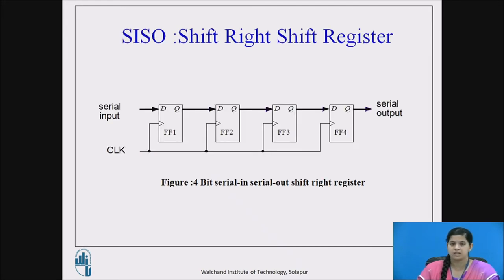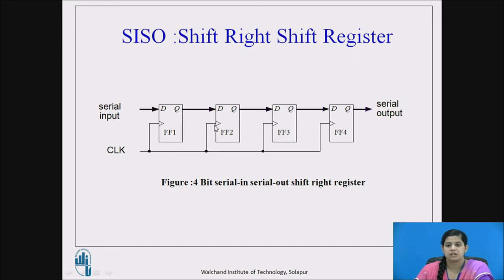First we will see the serial in serial out shift right shift register. Shift right means the bits are shifted towards the right one by one according to the given clock pulse. The block diagram shows a 4-bit serial in serial out shift right shift register. Four D flip flops are used here — flip flop 1, 2, 3, and 4. The input is given to the leftmost D flip flop, and the output of that is connected to the next D flip flop's input. Each and every flip flop's output is connected to the next D flip flop's input.